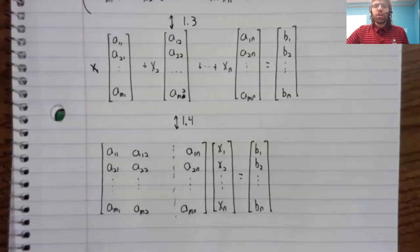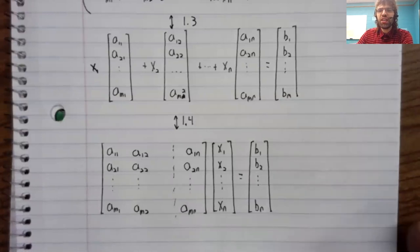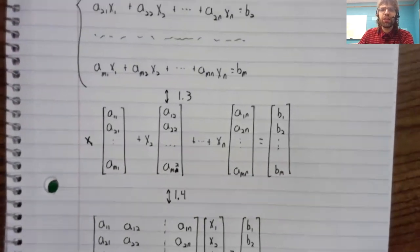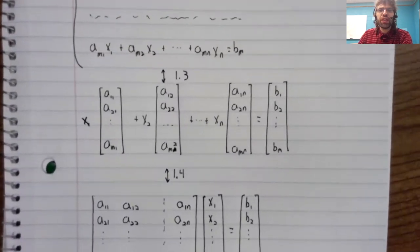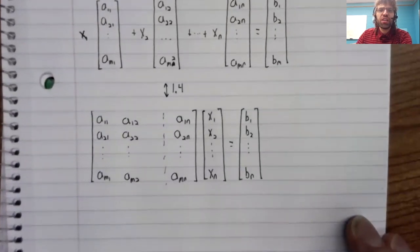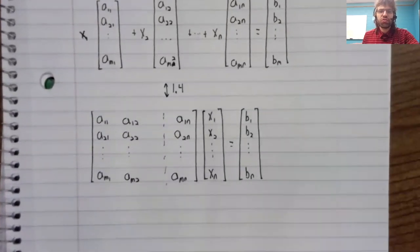So now we have three different ways of expressing the same thing. A system of linear equations is the same thing as a vector equation, which is the same thing as a matrix equation.